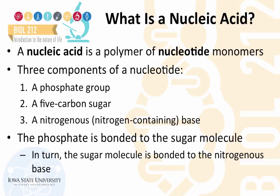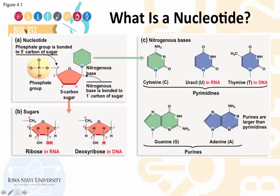The phosphate group is linked to the sugar molecule, and this molecule in turn links to the nitrogenous base. If you look at the structure of a nucleotide, the phosphate group is bonded to carbon number 5 of the sugar molecule. The carbons are numbered 1 through 5 in the clockwise direction. The sugar in turn is connected to the nitrogenous base.